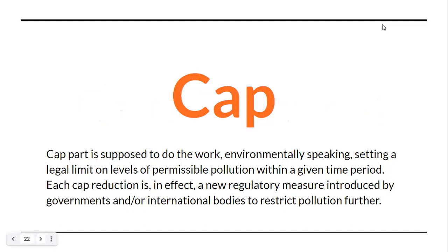There are two words: one is CAP and the other is trade. What is the CAP? CAP means limit. The CAP part is supposed to do the work in the environmental sense — it sets up a legal limit on the levels of permissible pollution and puts a time frame to it. CAP is essentially a legal permissible limit given to industries, set by governments or intergovernmental parties, and the idea is that this cap would be gradually lowered — made more stringent — so that industries would ultimately go green.